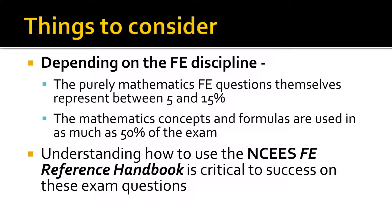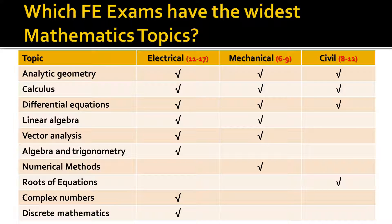Understanding how to use the NCEES FE Reference Manual is very critical to success on these exam questions. What you see here is a chart. I didn't cover all seven disciplines — I covered the most common three: electrical, mechanical, and civil — and I've covered the topics that I thought applied most to all of these disciplines, showing which FE exam covers which topic. The electrical exam is by far the one that covers the most topics, but mechanical is not far behind and civil is right in there as well. In the rest of this video, I'm going to go over pretty much most of these sections, though I probably won't get to discrete mathematics because that's really only used in the electrical test.